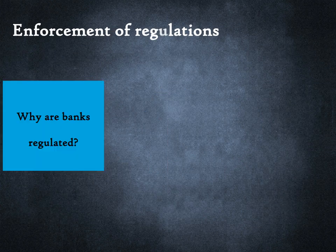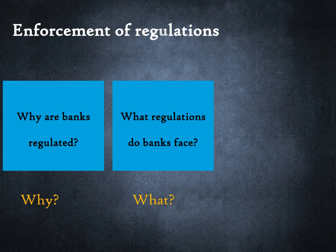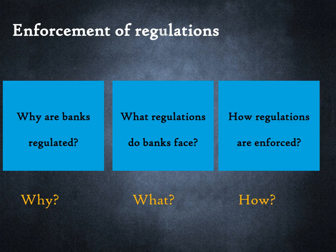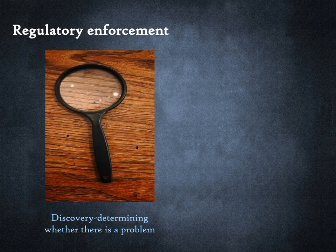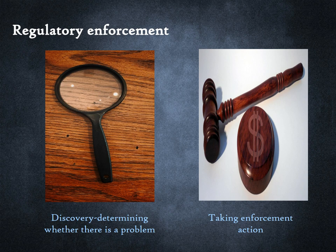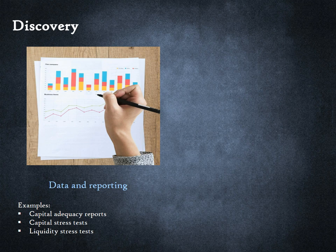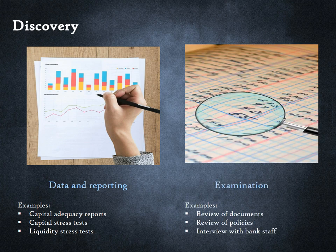We discussed why banks are regulated and what regulations they are subject to. Now we move on to the how — how regulations are enforced. Two things need to happen for effective enforcement: first, regulators must have a way of knowing whether there is a problem to begin with; and next, they must have the authority to take action, otherwise the regulations will not have any teeth. Regulators have two primary tools for discovery. First is demanding reports and data from banks — a very well-known data reporting requirement in the U.S. is called CCAR, which stands for Comprehensive Capital Analysis and Review, where banks have to demonstrate how they calculated their regulatory capital requirement and conduct stress tests. The second tool is examinations — audits where examiners employed by regulators review a bank's policies and procedures.